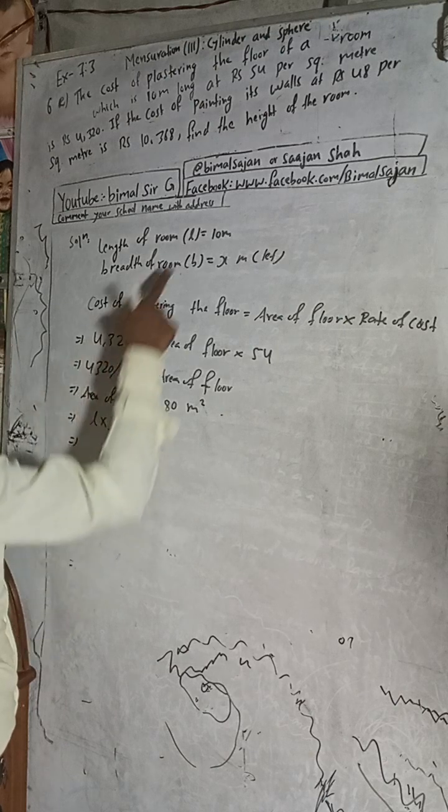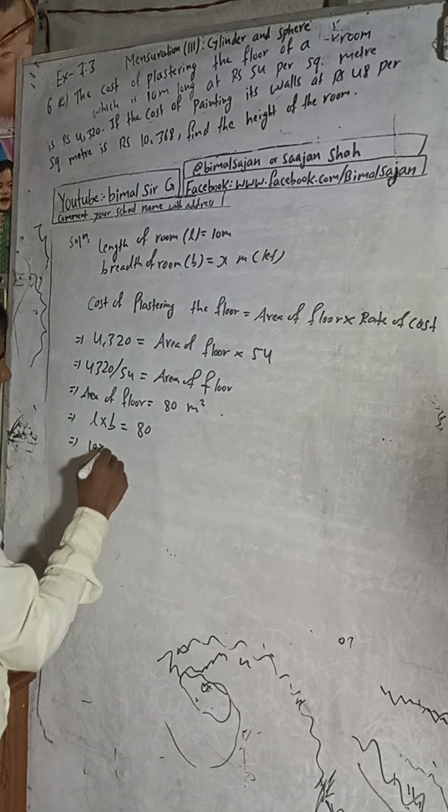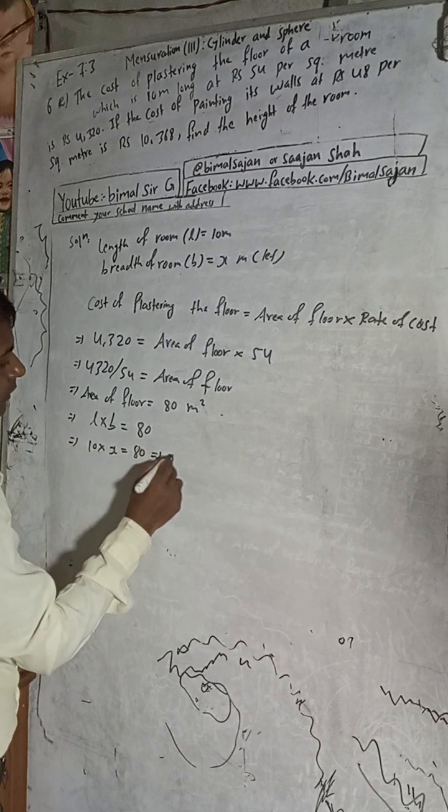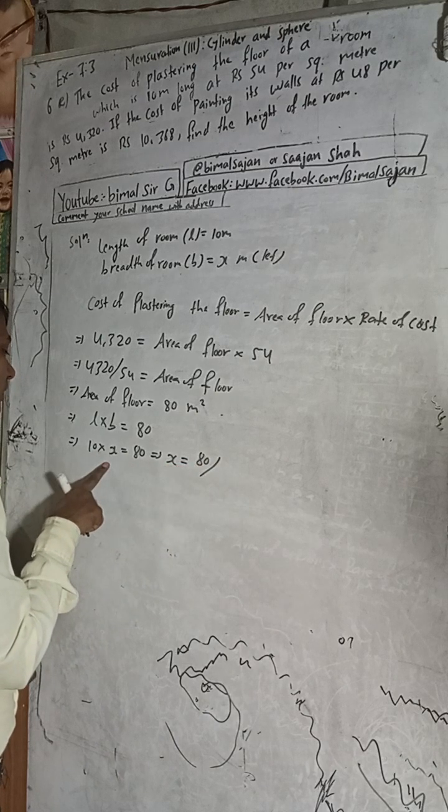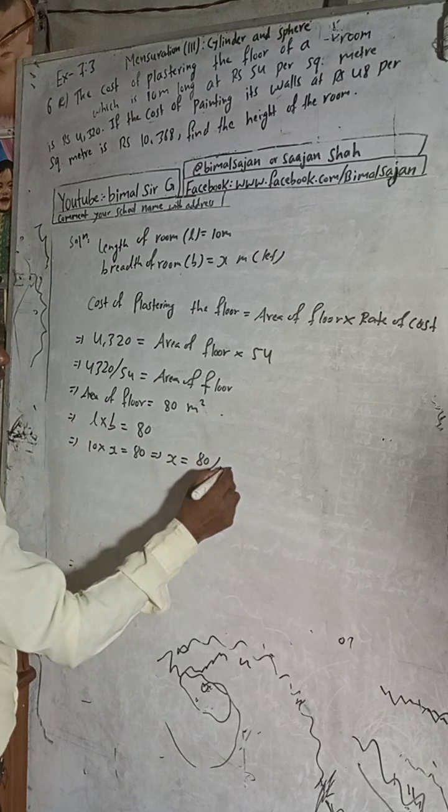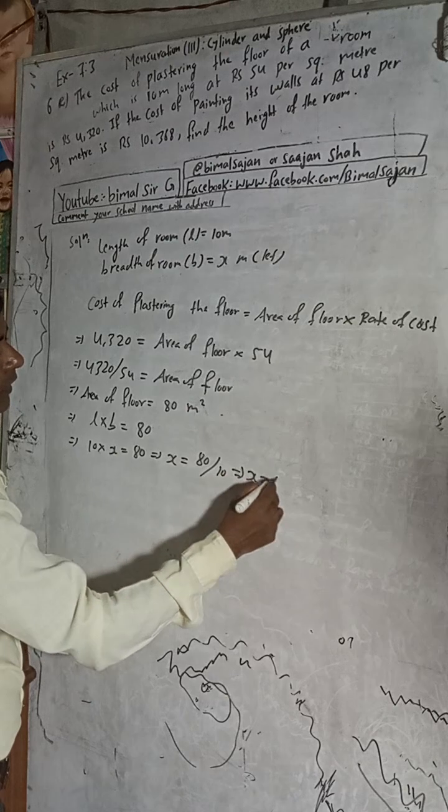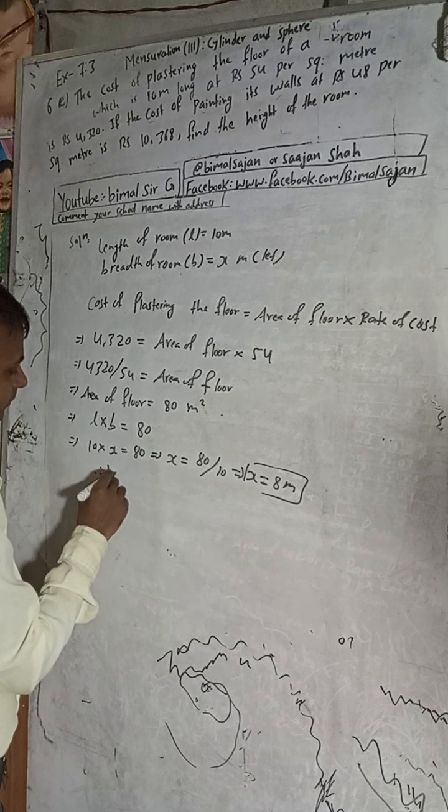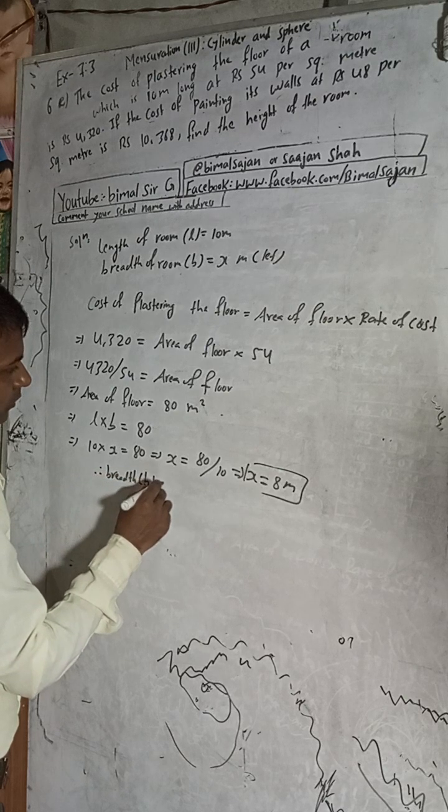L value is given, 10. In the left side this is multiplied, so when you change the side it divides, 80 divided by 10. So B is equal to 8 meter. Therefore breadth B is equal to 8.